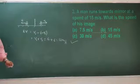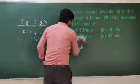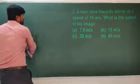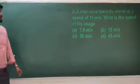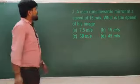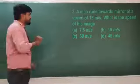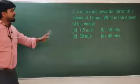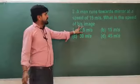So the next question is also similar to the first. A man runs towards the mirror at a speed of 15 meters per second. But here they are asking only the speed of the image — not the relative velocity between the man and the image, only the image speed.